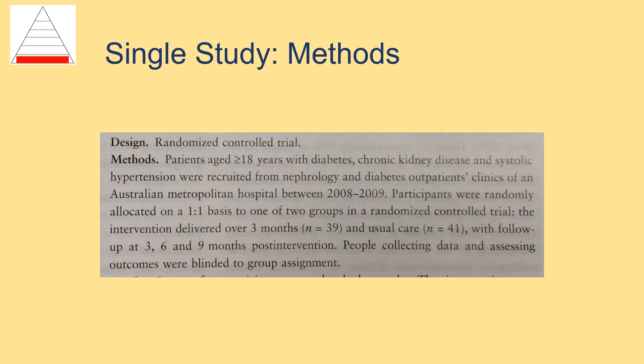The methods section for a single study research article will include the study design — for example, randomized controlled trial — a description of the type of research subjects involved, or the population, the intervention, or what the subjects were asked to do, how the data was collected, and so on.